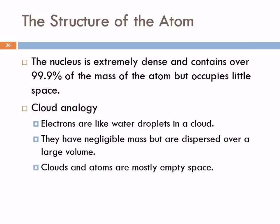This benchtop that seems so solid - mostly empty space. Your book also talks about a cloud analogy. Today was foggy, and fog is basically a cloud that's just down here where we can run through it. Electrons are like the little tiny water droplets in the cloud - they have negligible mass, they take up negligible space, but they're dispersed over a large volume. If you took a cloud and squished all the water together you wouldn't have much water at all. It's mostly empty space, and yet it's hard to look through a cloud.